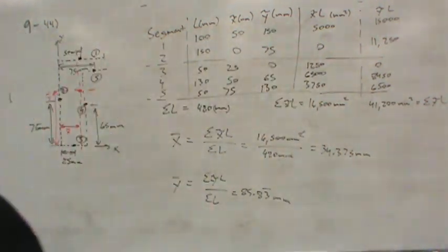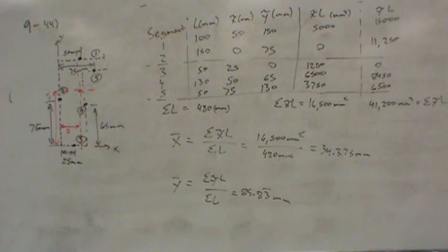But that's the centroid of this bent piece of wire and acts, it would act as the center of gravity, the center of mass, all those things because, well, assuming that the wire is uniform, which I would assume.